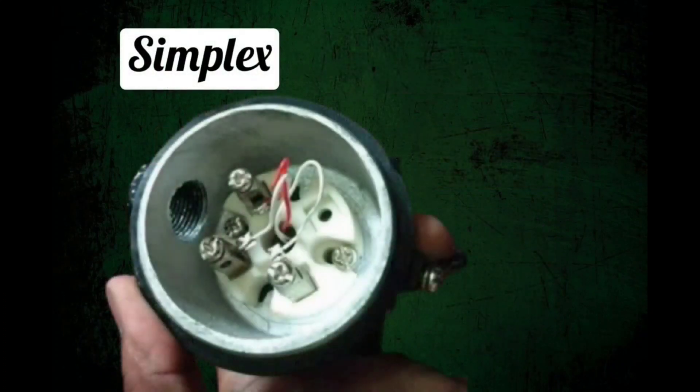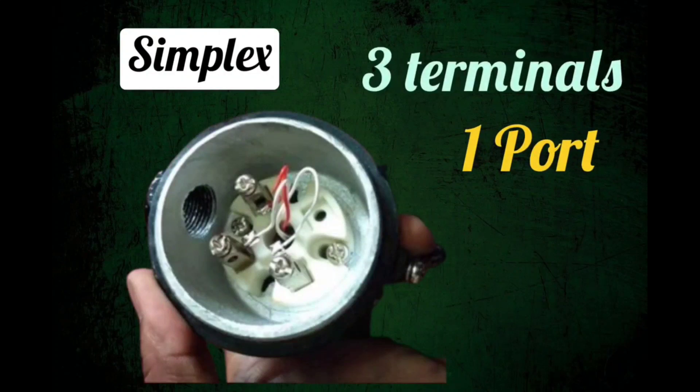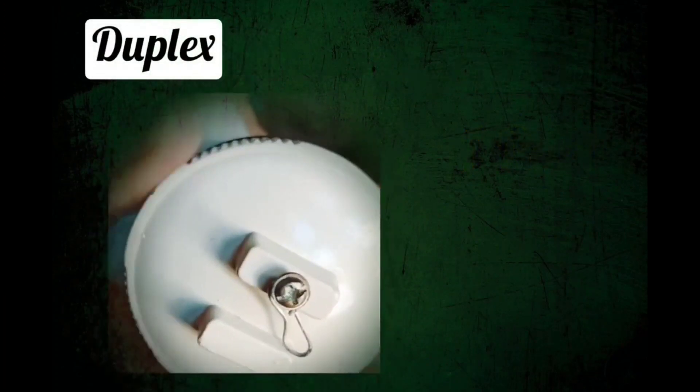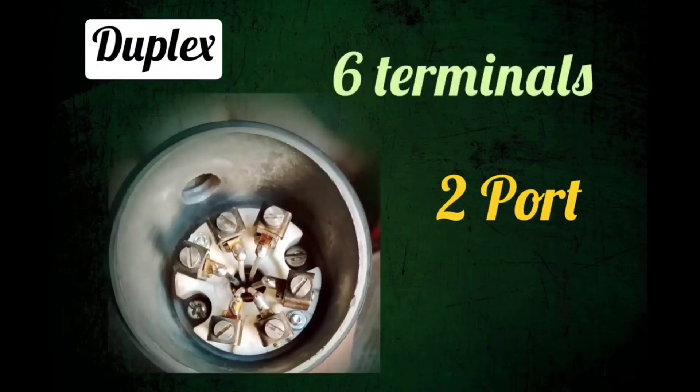Simplex RTD has only one port for connections, meaning it has three wires for connections. And duplex RTD has two ports for connections, meaning you can see six wires for connections.